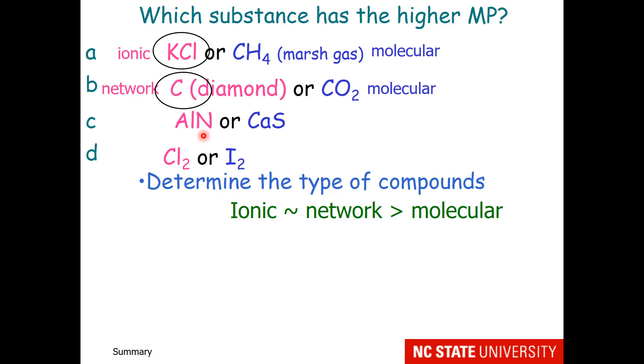What about aluminum nitride or calcium sulfide? These are both ionic solids. If both are ionic, in general the compound that involves ions with larger charges has a higher melting point than ions with smaller charges.